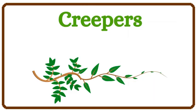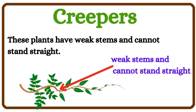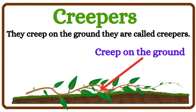Creepers. These plants have weak stems and cannot stand straight. They creep on the ground — they are called creepers.